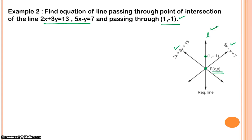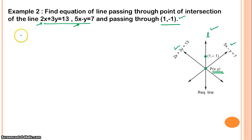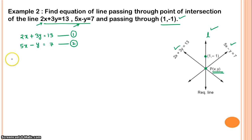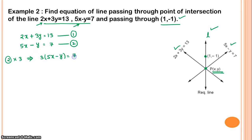We will use the two-point form to find the equation of the line. First, we find the point of intersection by solving the two equations simultaneously. The first equation is 2x plus 3y equals 30, and the second equation is 5x minus y equals 7.